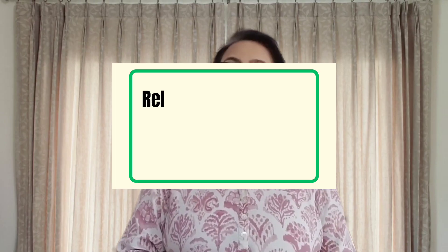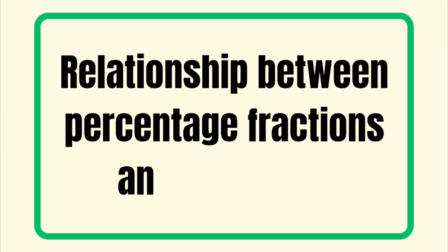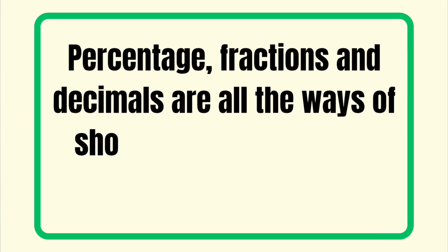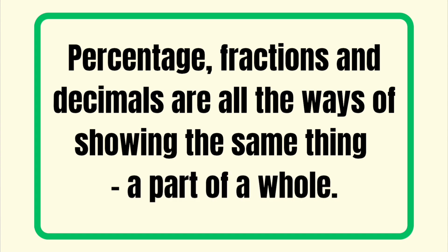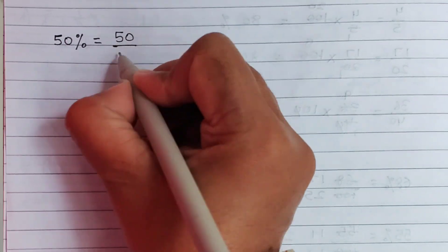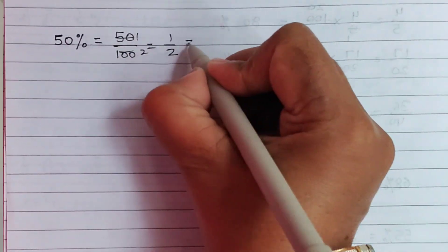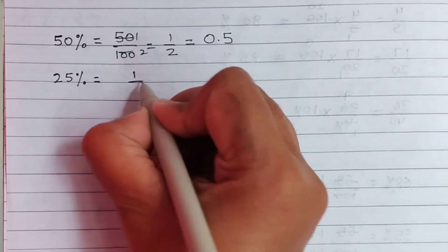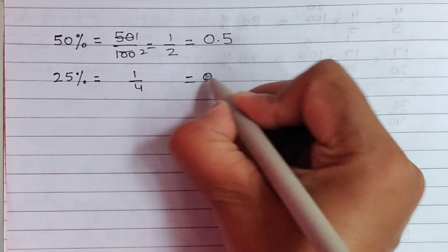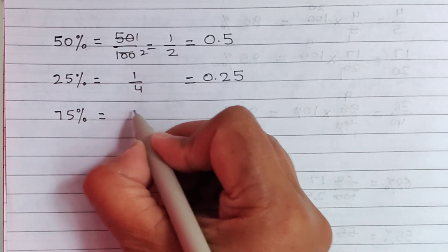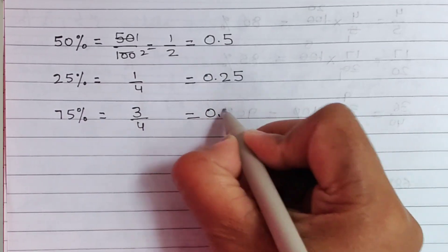Now let's learn the relationship between percentage, fractions, and decimals. Percentage, fraction, and decimals are all ways of showing the same thing — a part of a whole. For example, 50% means half, which is 1/2 or 0.5. 25% means one fourth, which is 1/4 or 0.25. 75% means three fourths, which is 3/4 or 0.75.